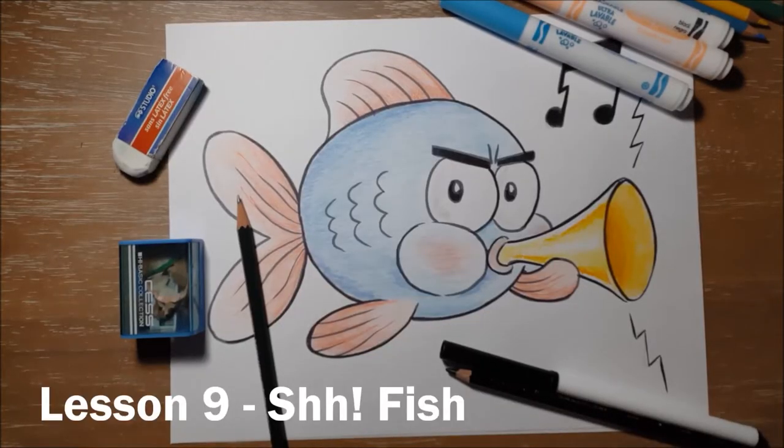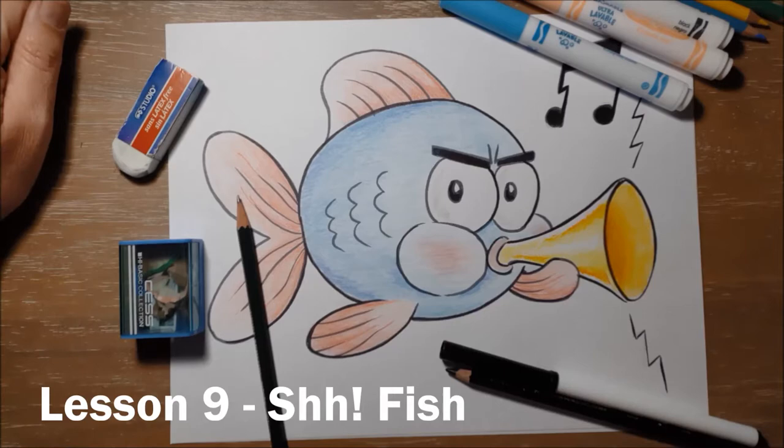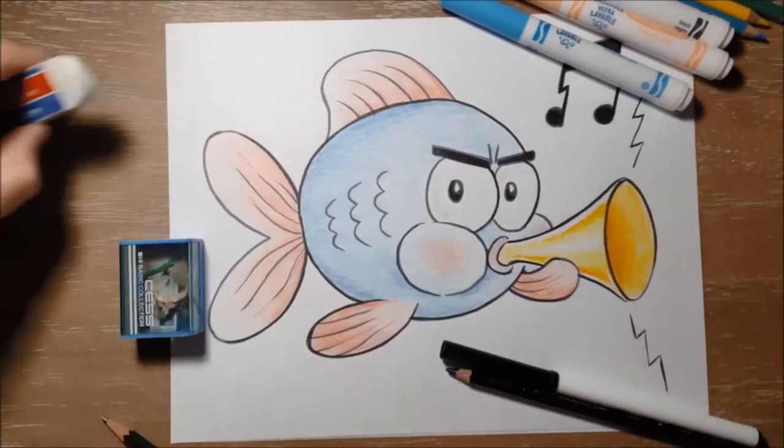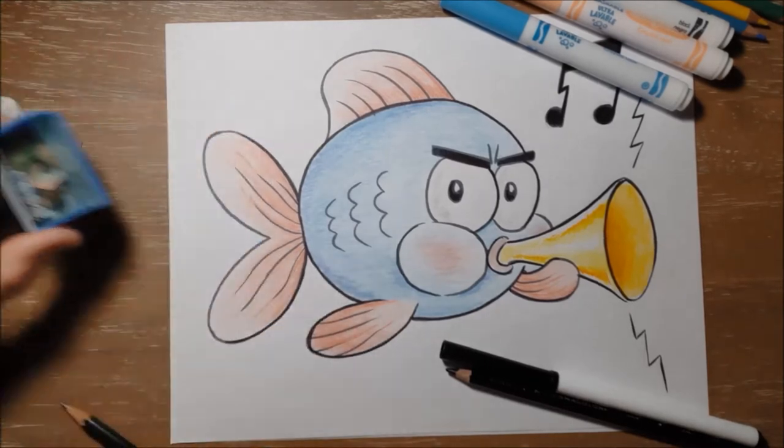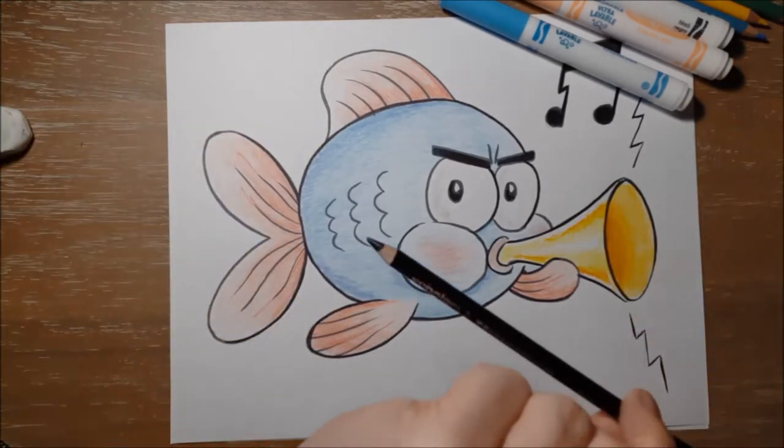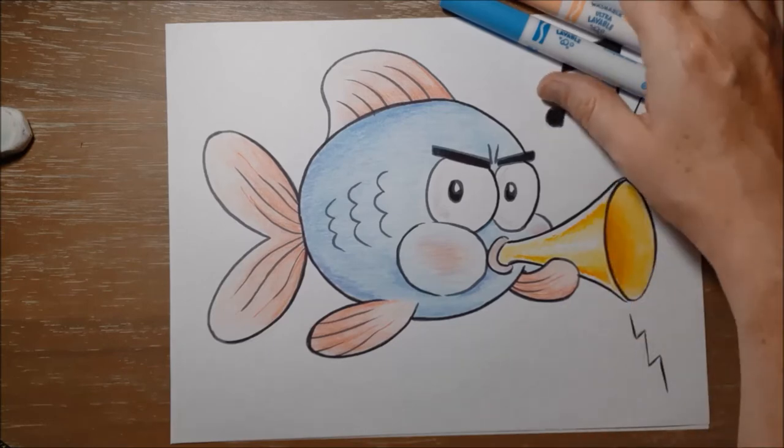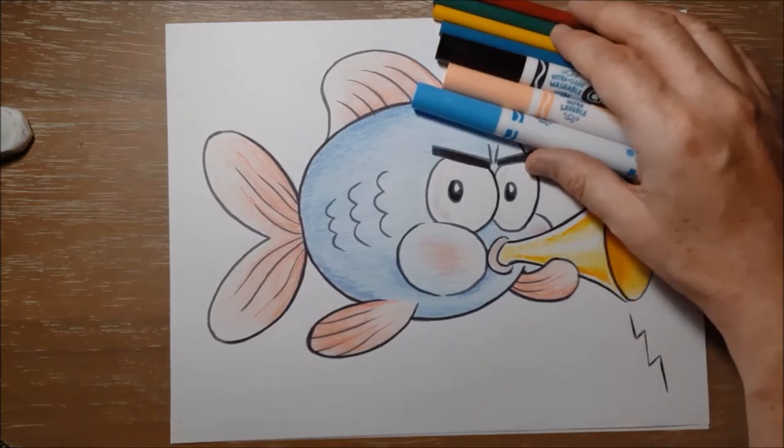So this is Shush Fish, and to draw Shush Fish you will need a pencil, an eraser, a pencil sharpener, a black marker or a black pencil crayon to outline with at the end, and some color markers or some color pencils to color with.